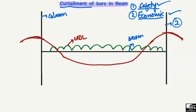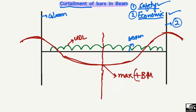We can see that the maximum positive bending moment will occur somewhere at the midpoint of the beam. The negative bending moment will occur at the columns — here we will have maximum negative bending moment, and here also there will be maximum negative bending moment. This is the general bending moment diagram for such a beam.